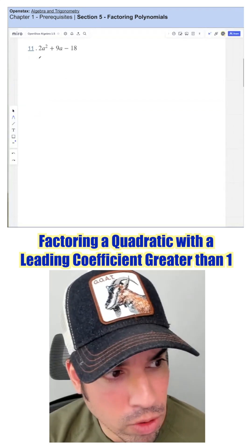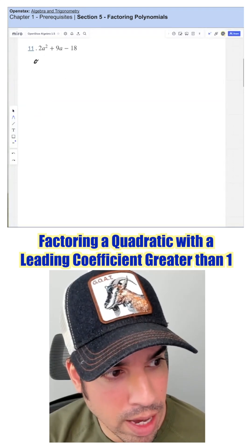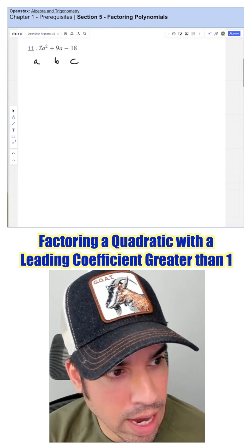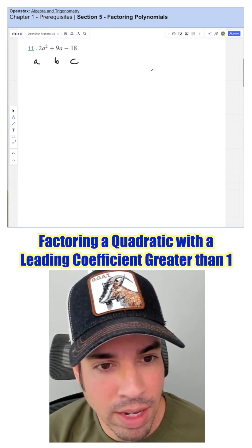So again, here we're going to factor by grouping. First, I'm going to make note of the A, B, and C. A is 2, B is 9, C is negative 18.